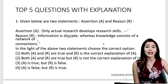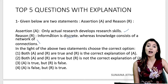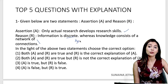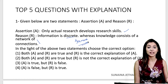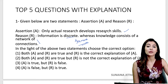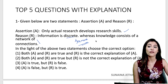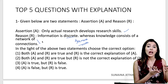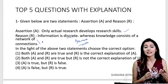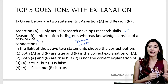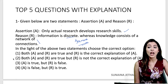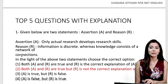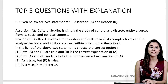Now we have seen that both A and R are correct. The trick is: whenever an assertion-reason question comes, add 'because' between the two and see if it makes sense. 'Only actual research develops research skills because information is discrete whereas knowledge consists of a network of connections' — after adding 'because,' you can immediately see that one talks about actual research and the other talks about knowledge and information, so there is no direct connection.